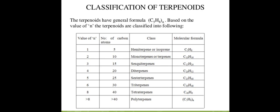Terpenoids have the general formula C5H8N. Based on the value of N, terpenoids are classified by number of carbon atoms: 5, 10, 15, 20, 25, 30, 40, and greater than 40. The corresponding classes are hemiterpene (isoprene), monoterpene, sesquiterpene, diterpene, sesterterpene, triterpene, tetraterpene, and polyterpene, each with its own molecular formula.